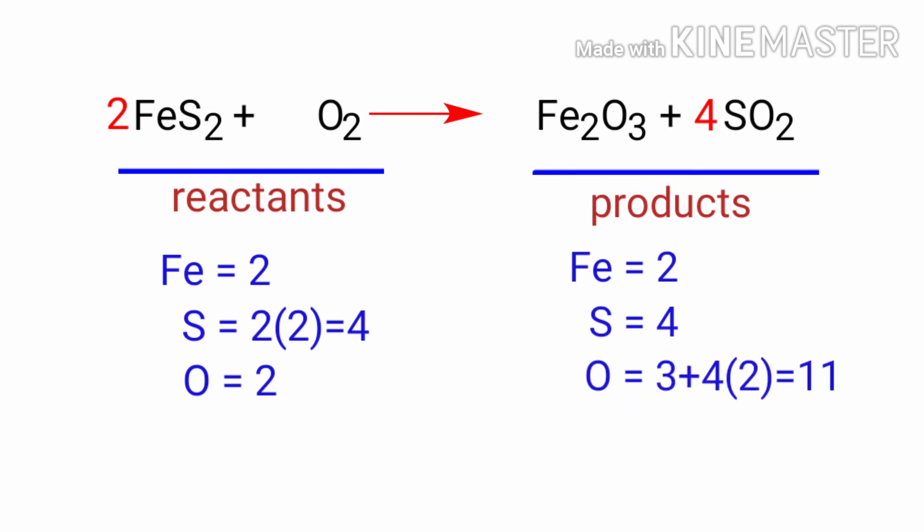The Sulphur atoms are balanced. Now we need to balance the Oxygen atoms. To do this, we need to put a coefficient of 11/2 in front of O2.